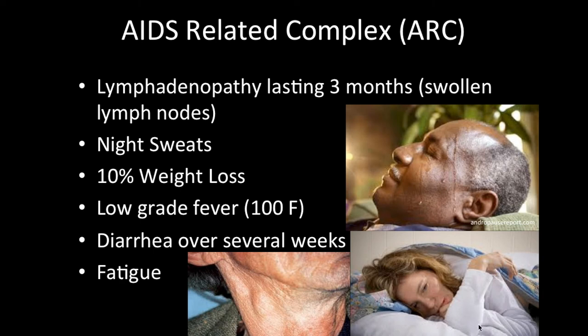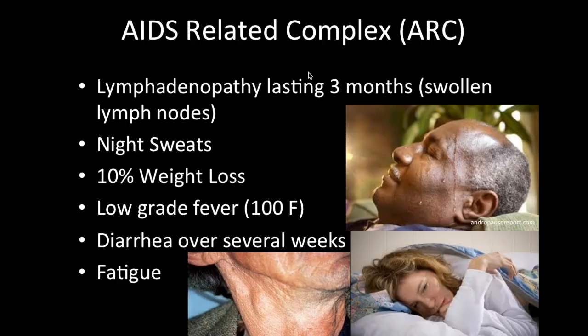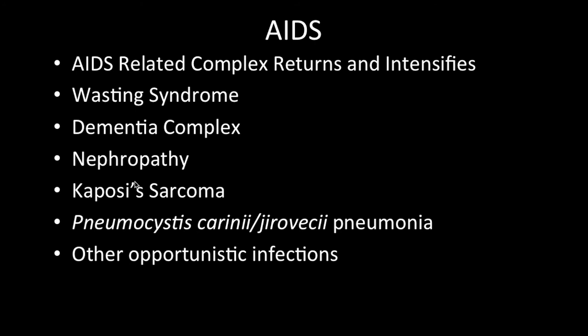Usually around two years after the HIV-related complex stage, if left untreated, the condition progresses to full AIDS. All the previous conditions return, intensified, and you will also develop a wasting syndrome, a dementia complex, nephropathy leading to renal failure requiring dialysis, Kaposi's sarcoma, Pneumocystis pneumonia, and other opportunistic infections.